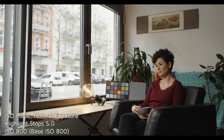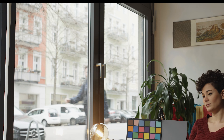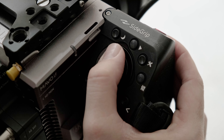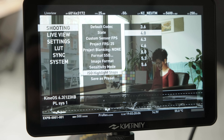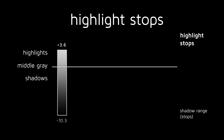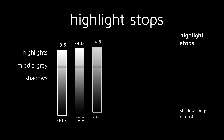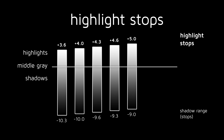Specifically, we want to decide how much dynamic range should be assigned to the highlights or bright spots of the image above middle grey, and how much should be assigned to the shadow areas below middle grey. On the Mavo LF, this dynamic range distribution can be controlled using the highlight stop setting, which allows you to select how many stops of the dynamic range are assigned above middle grey. It offers a range of 3.6 to 5.6 stops.